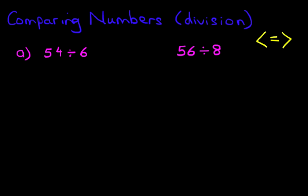Okay, on the left-hand side we've got 54 divided by 6. On the right-hand side we've got 56 divided by 8. So what is the first one on the left? 54 divided by 6. Now you should know this from your times tables. 54 divided by 6 is 9.